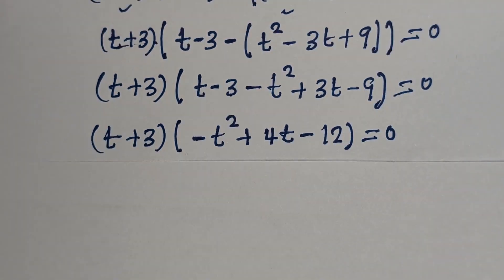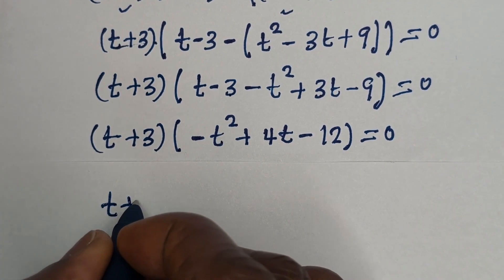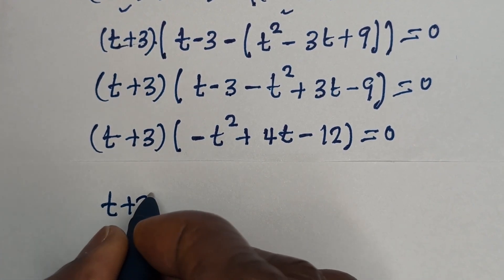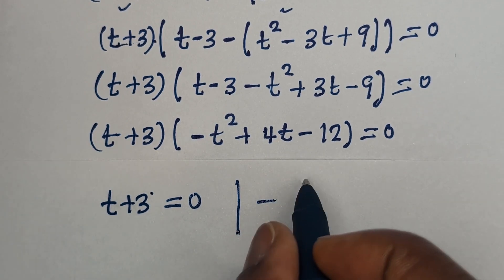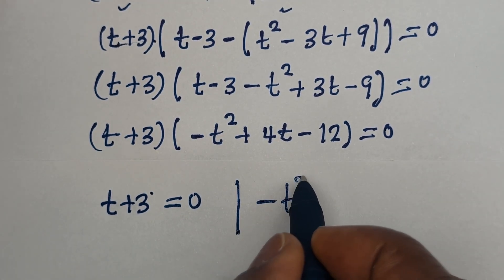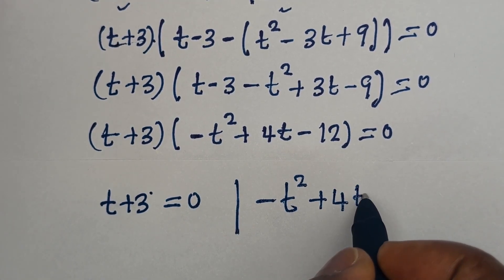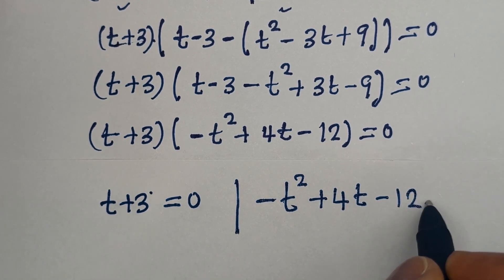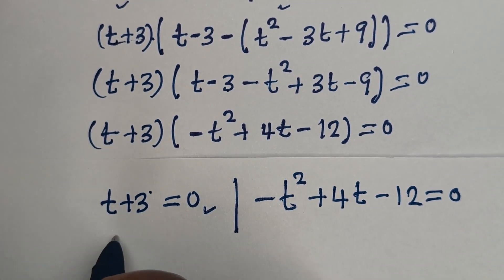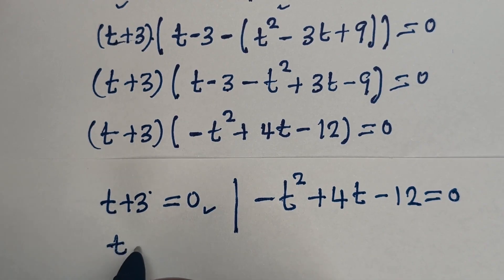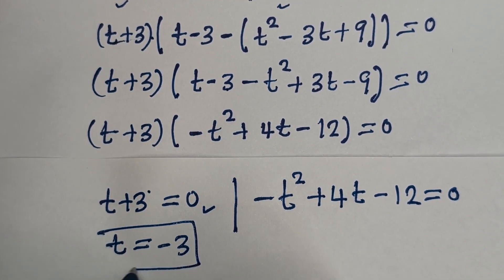The first case is t plus 3 is equal to 0, and the second case is minus t squared plus 4t minus 12 is equal to 0. From the first case, t is equal to minus 3. This is the first value of t.